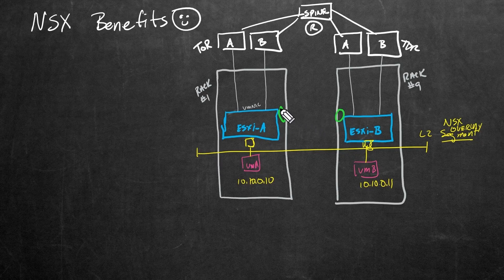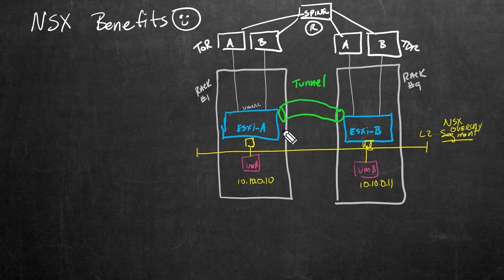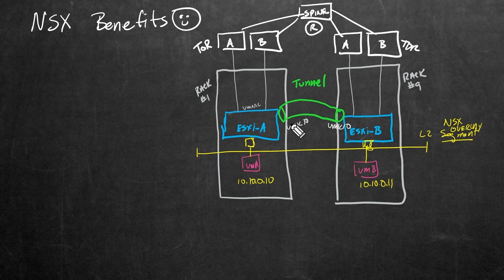There are the two ends of the tunnel. This tunnel between ESXi A and ESXi B, created by NSX, is going to be terminated at VM kernel adapters on each of the hosts — perhaps we're using VMK10 on each side. In association with these VM kernel adapters, we're also going to have an IP address for each end of the tunnel. So maybe over here at ESXi A, VMK10 is using 10.11.11.11 with a 24-bit mask.